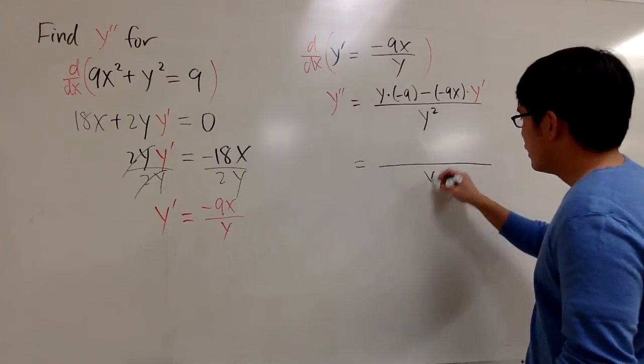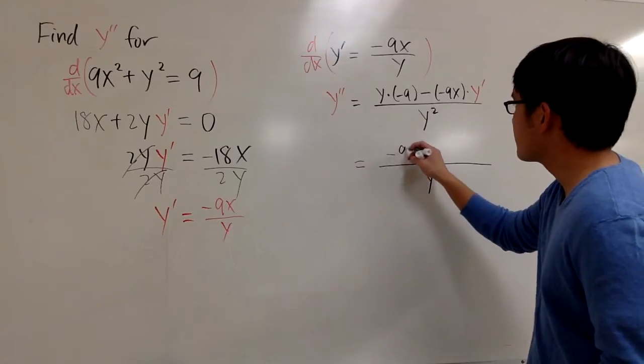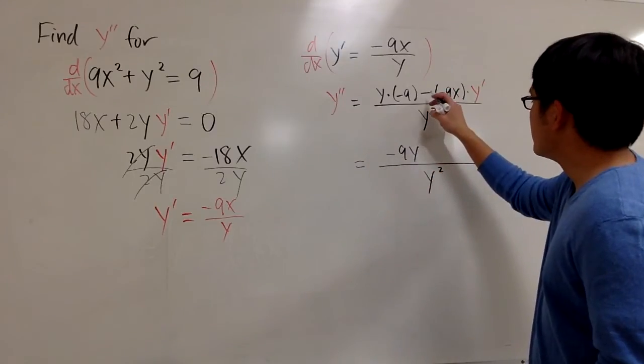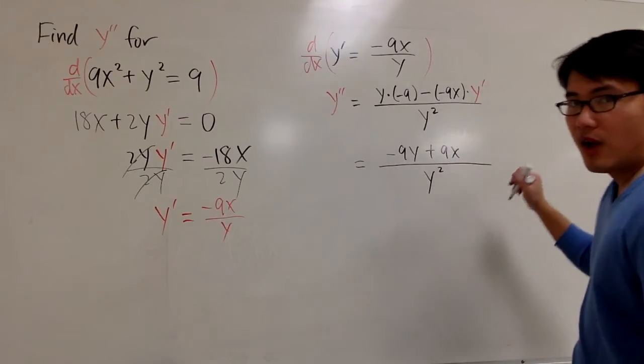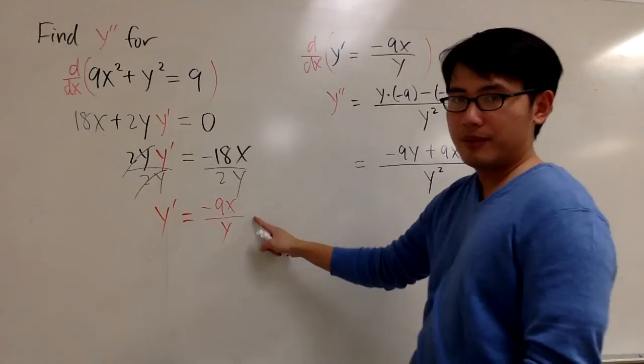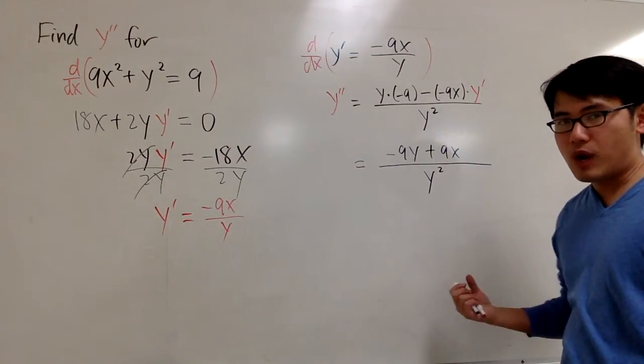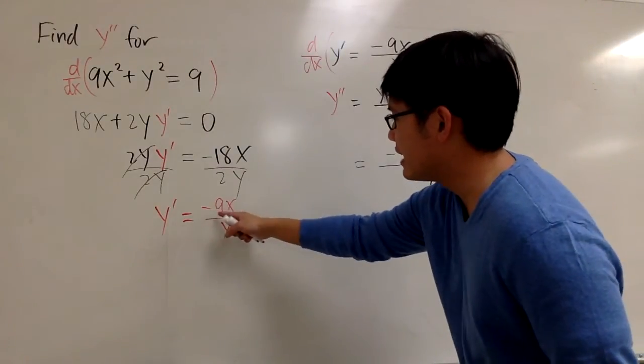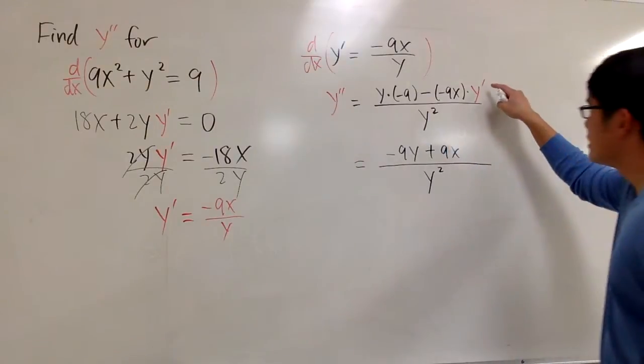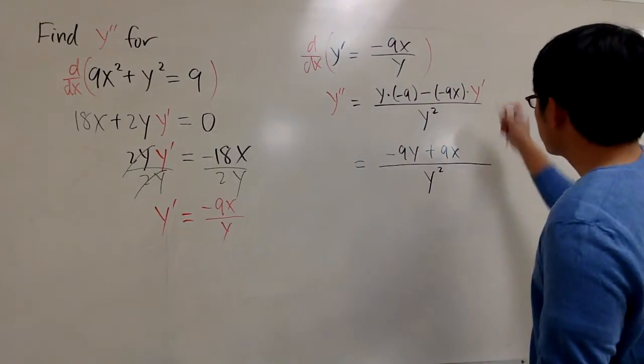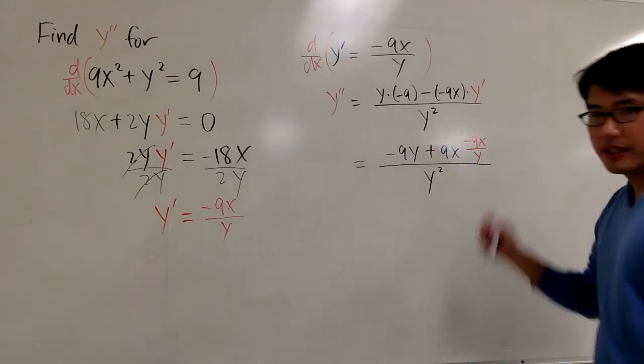Let me write down the y² on the bottom again. And then for this part on the top, we have negative 9y. And then this is negative negative, so it becomes plus 9x. However, for y', if we look back here, our expression at the end should be just with x and y. Y' is the same as negative 9x over y. So we are going to take this to replace that. We're replacing this with that. So I will put this back, negative 9x over y, just like this.